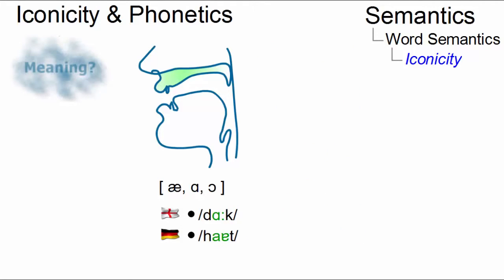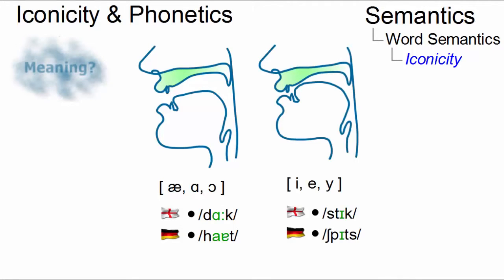Furthermore, open vowels are also more likely to be associated with round shapes and dark or gloomy moods, like 'dark' or German 'hart', whereas close vowel sounds are more likely to be associated with pointed shapes and happy moods, like 'stick' or German 'spitz'.